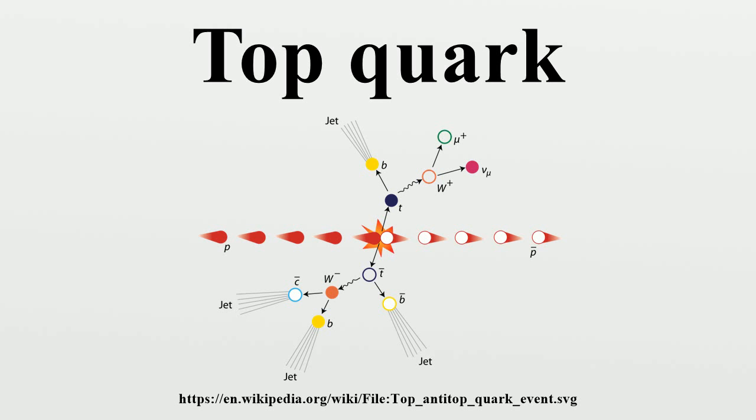This is about a twentieth of the time scale for strong interactions, and therefore it does not form hadrons, giving physicists a unique opportunity to study a bare quark. Because it is so massive, the properties of the top quark allow predictions to be made of the mass of the Higgs boson under certain extensions of the standard model.